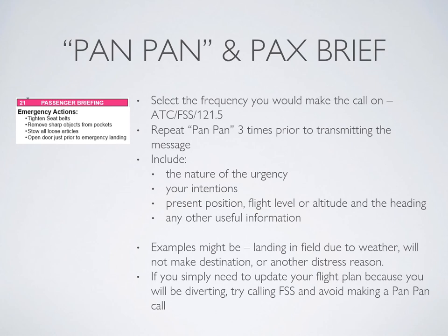For the pan-pan call, which you've seen in your radio license exam: first, select who you're calling — ATC, flight service station, or as a last resort 121.5 if you can't reach anyone else. Say pan-pan three times before transmitting your message. Include the nature of the emergency, your intentions, present position, flight level or altitude and heading if required, and any other useful information. For example, if landing in a field due to weather and not making your destination, update your flight plan and include that in your pan-pan call. Note: if you're simply calling flight service to update your flight plan because you've changed your destination, do not use pan-pan unless it's actually a distress transmission.